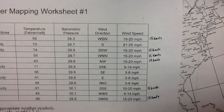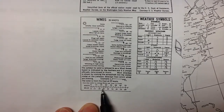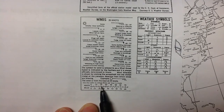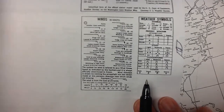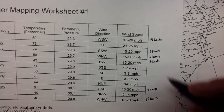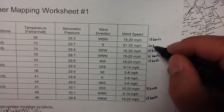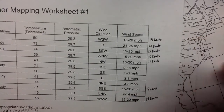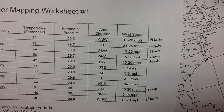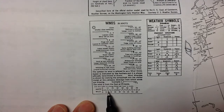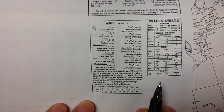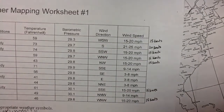Next we're going to convert the 25 mile an hour reading. A 25 mile an hour wind is about 21 knots, but we're going to round it to 20. The next thing is our 9 to 14 mile an hour wind. 14 miles an hour is just short of 15, and that lines up almost exactly with 10 knots, so we're going to convert those to 10 knots.